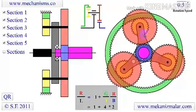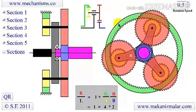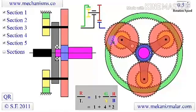Epicyclic gearing systems also incorporate the use of an outer ring gear, or annulus, which meshes with the planet gears.